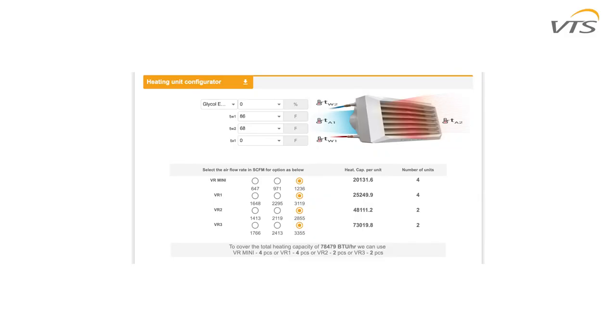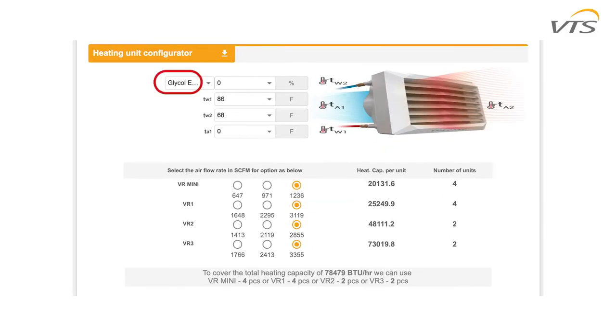The EHCAD program can also assist with selections with the addition of known parameters such as entering water temperature, leaving water temperature, and entering air temperature. If glycol is used in the hydronic system, this variable may also be added and a final selection can be made. As you can see, our online EHCAD platform is a very powerful tool that can help you to make the correct heater selection for your next project.